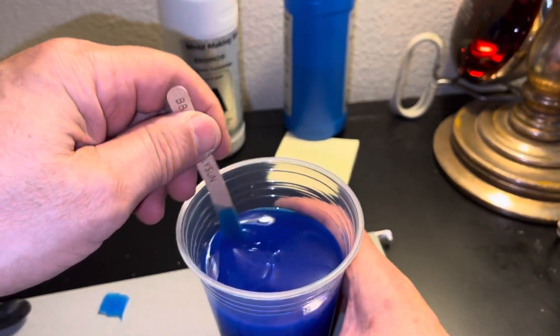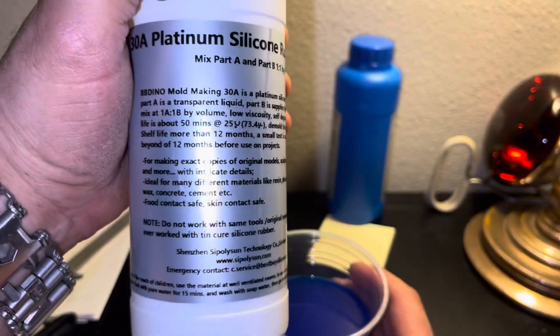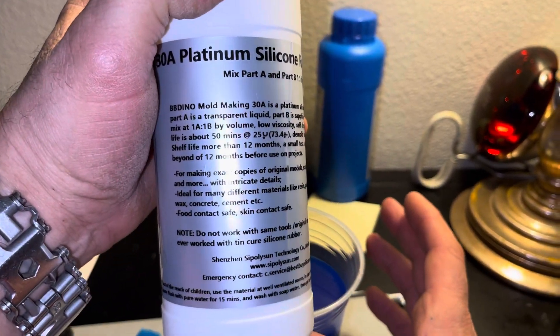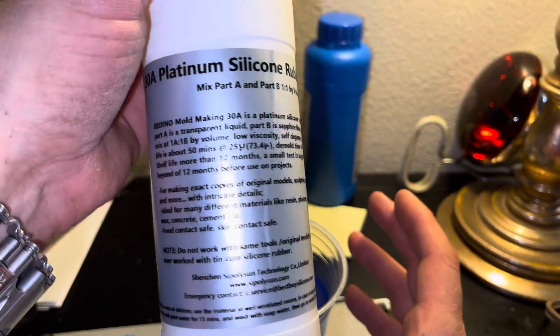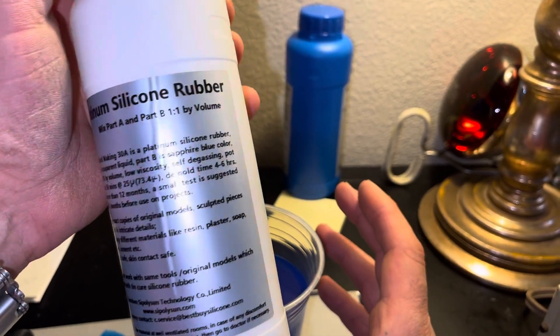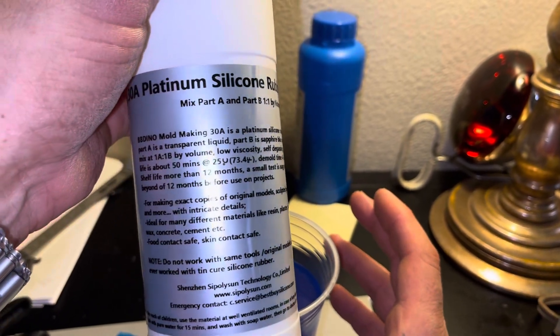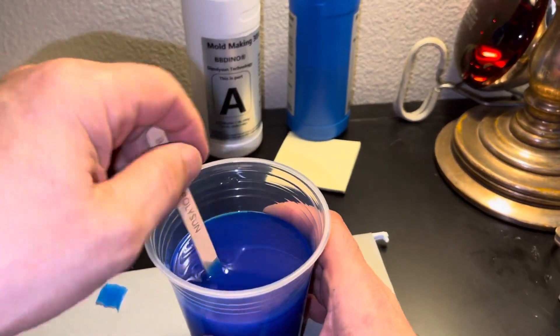It says working pot life is three to four hours which is great. Self degassing pot life is about 50 minutes, and then it basically cures in three or four hours.